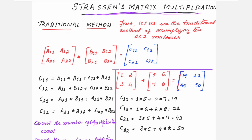Before going through the steps for Strassen's matrix multiplication, let us see how we normally carry out the multiplication using the traditional method for a 2×2 matrix. So, let us see that method.